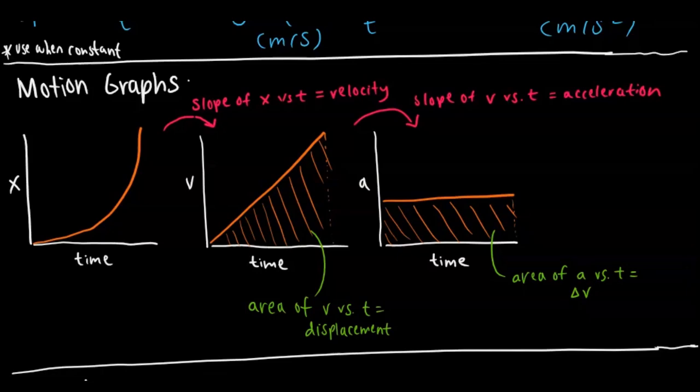Your acceleration is based off your velocity versus time graph, just like your velocity is based off the position over time graph, and that is represented by the slope. The slope of the position versus time graph is your velocity. The slope of the velocity versus time graph is your acceleration.